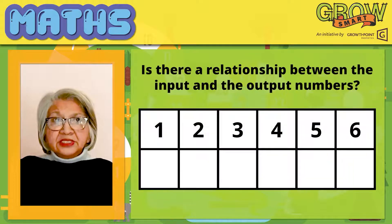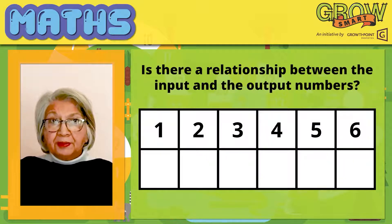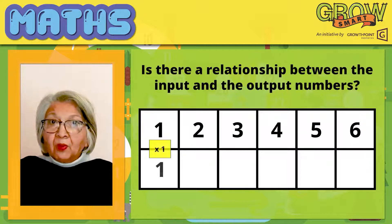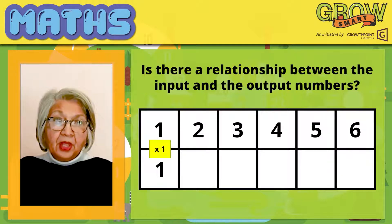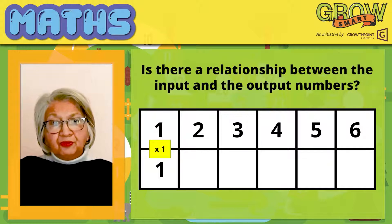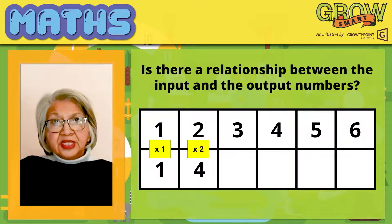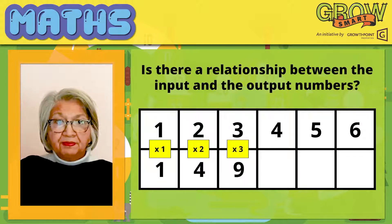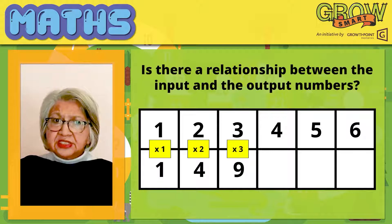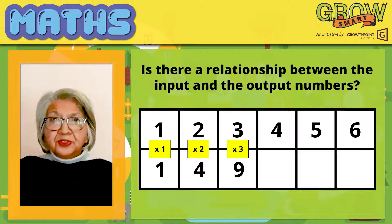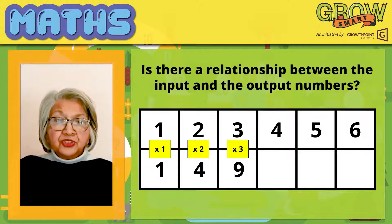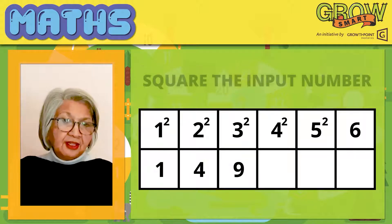Let's see. 1 multiplied by how many is equal to 1? That's right — 1 multiplied by 1 is equal to 1. 2 multiplied by how many is equal to 4? That's right — 2 multiplied by 2 is equal to 4. 3 multiplied by how many is equal to 9? 3 multiplied by 3 is equal to 9. What do we notice? We have to multiply the input number by itself to get the output number. That means we have to square the input number.